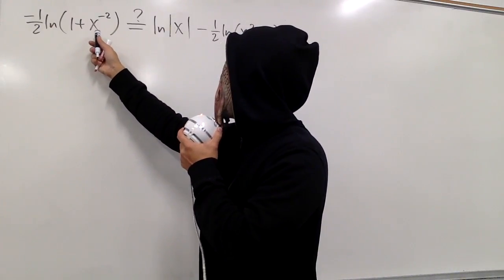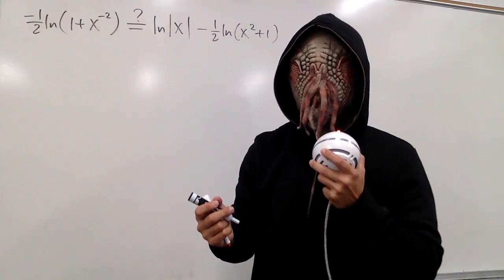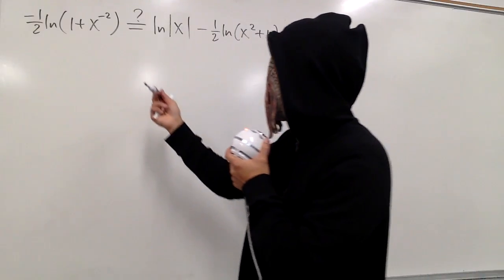So first, we notice that we have x to a negative 2 power. As usual, we can write that as 1 over x squared, and that will be my first move.